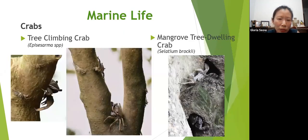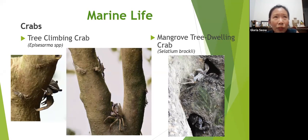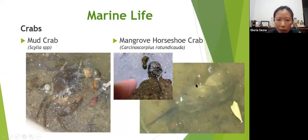In the mangrove, as you walk along the boardwalk at Pasir Ris, you can come across tree-climbing crabs. These crabs are unique because they can climb trees to feed on the leaves, and they do so also to escape from predators brought in by the high tide — big fishes that swim in could eat these crabs. There is also a mangrove tree-dwelling crab that looks similar but has stripes on it, and there are mud crabs which can be eaten by humans.